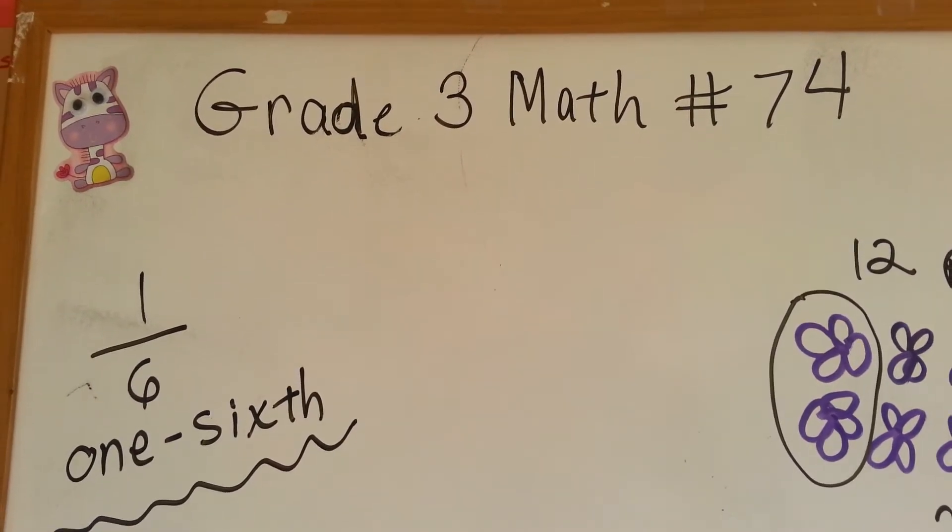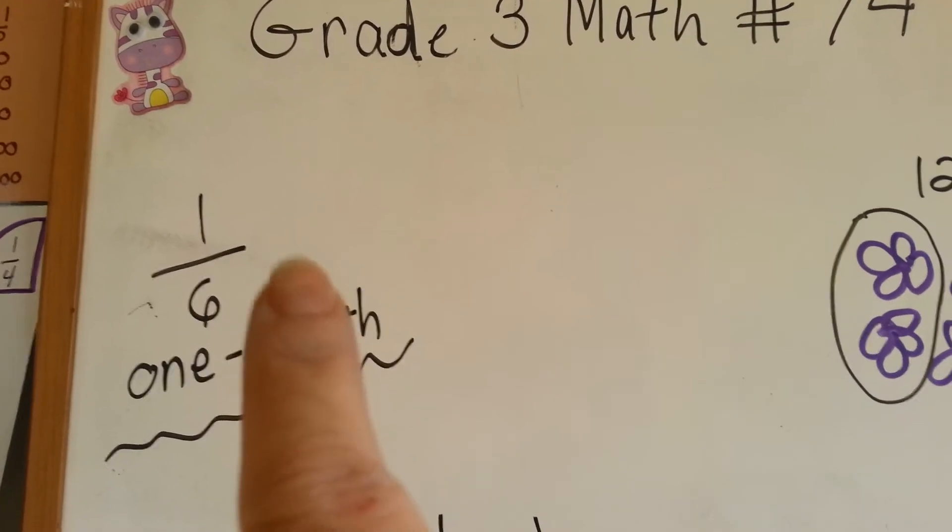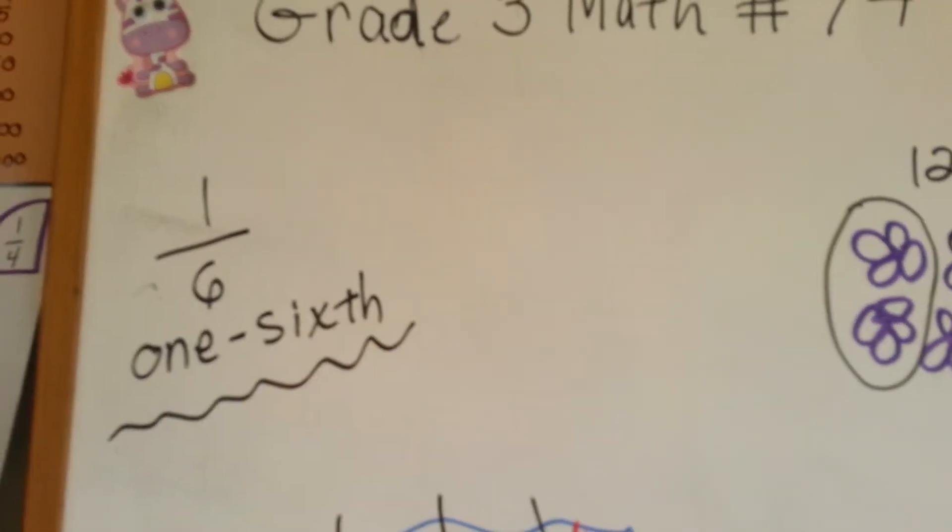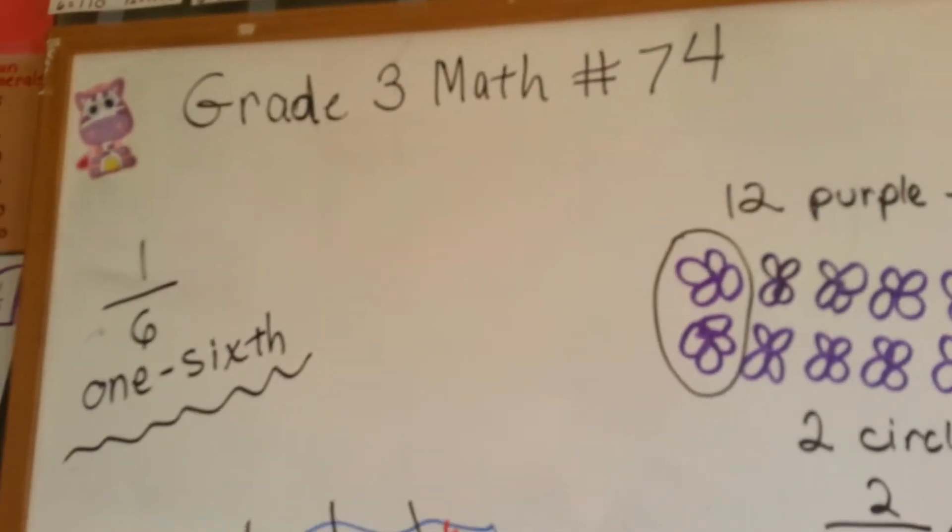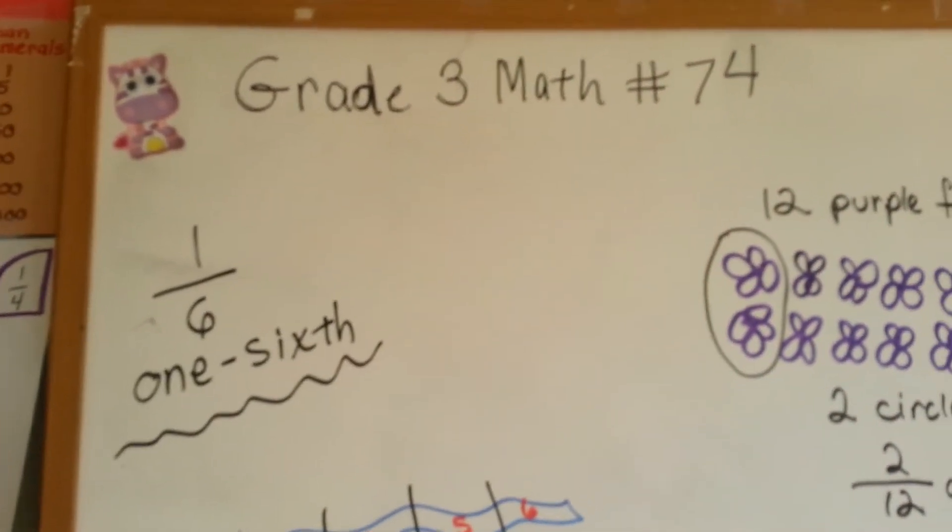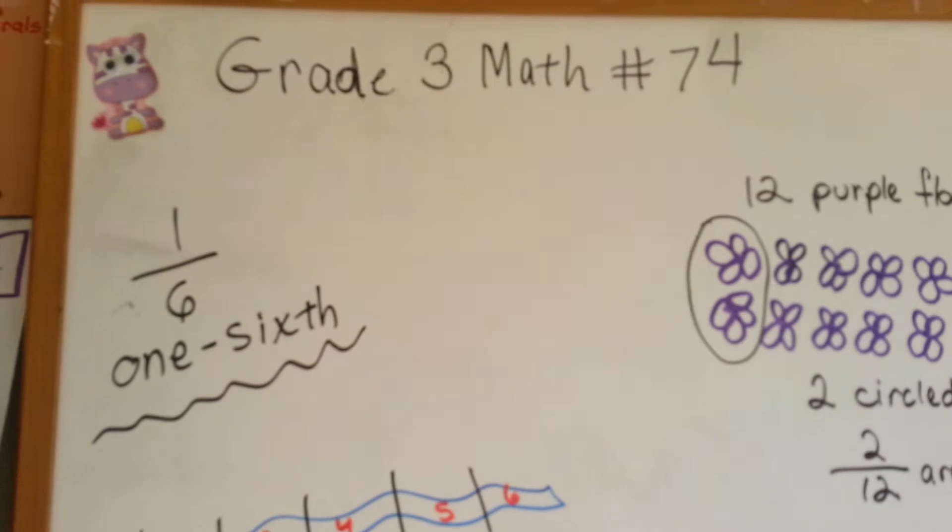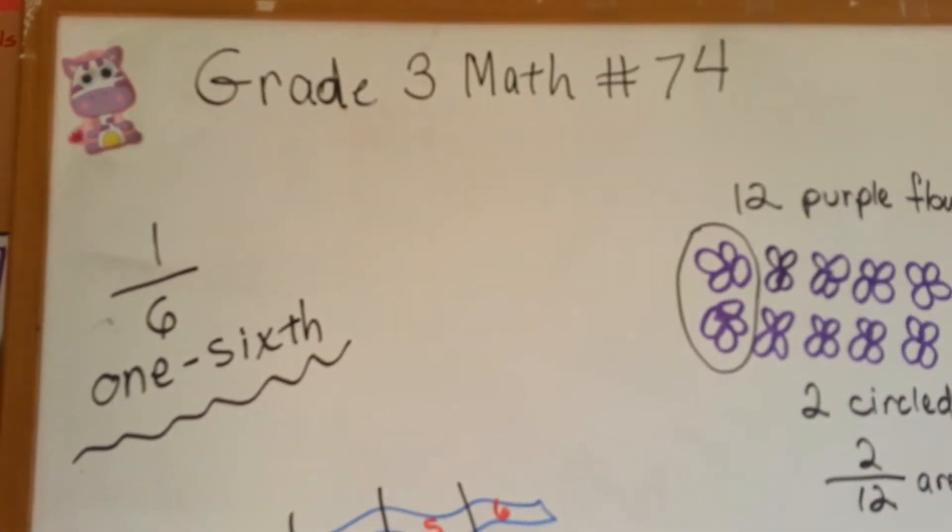Grade 3 math, number 74. One-sixth. We've been talking about fractions and now we are at one-sixth. We did one-half, one-third, one-fourth, one-fifth.